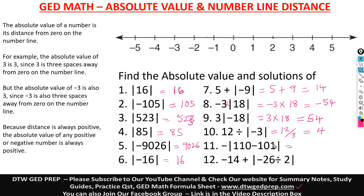Here we have a negative outside, and the absolute value acts like a parenthesis, so we resolve what's inside first. This is 1110 minus 101, which gives us 9. So we have the absolute value of 9, which is 9. But there's a negative outside, so it's negative times 9, giving us negative 9.